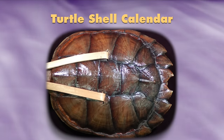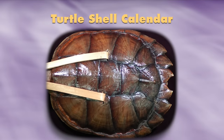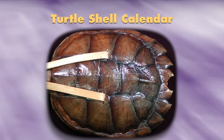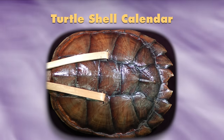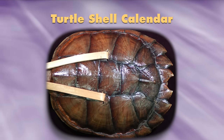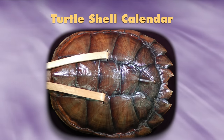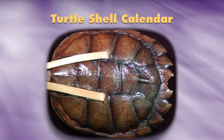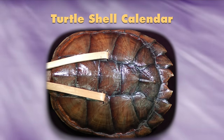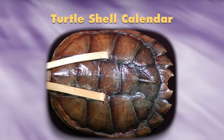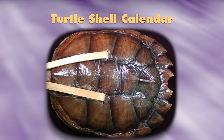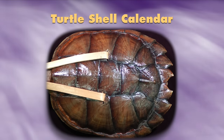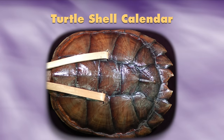The turtle shell is also our calendar. There are 13 main plates on the back, representing the 13 moons that happen usually in every year. And there are a number of smaller plates that go around the outside, representing the number of days of the month between each new moon. So we can keep track of time. The turtle is this symbol of the earth — it rests on its back, but it's also an important timekeeper to us. And as we know, turtles have been around since prehistoric times.